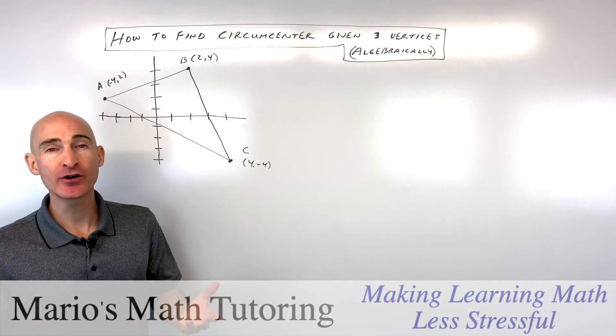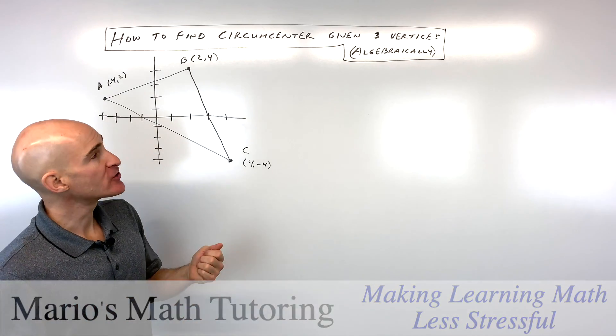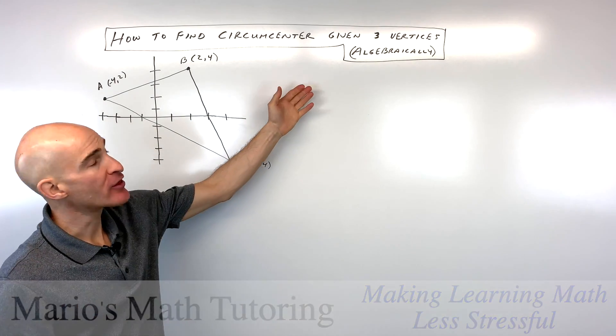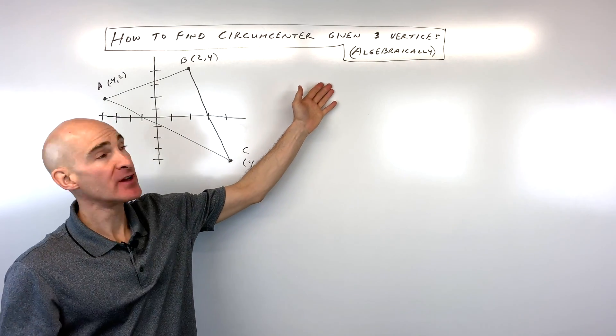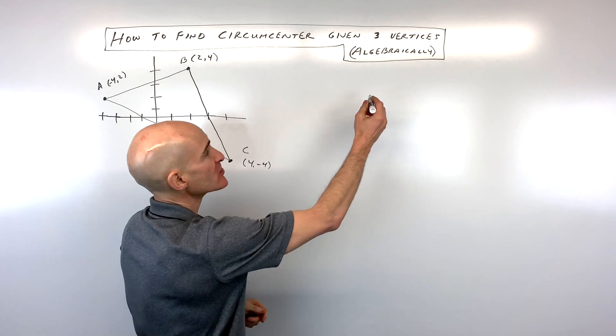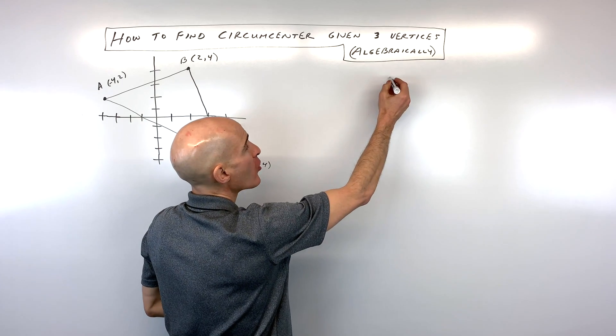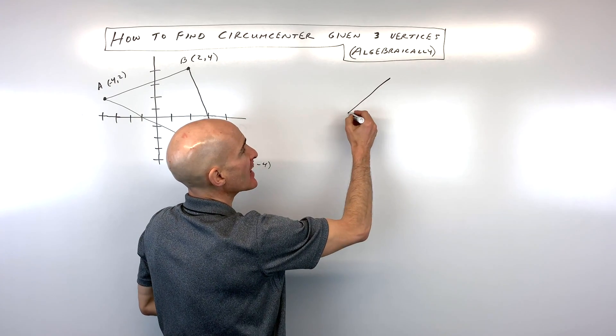So what exactly is the circumcenter? The circumcenter is where the three perpendicular bisectors cross or intersect.